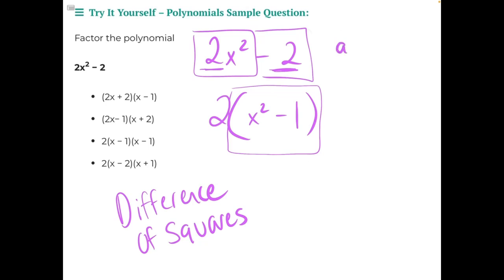The standard form of a difference of squares problem is a squared minus b squared. And the way this is factored out is a plus b times a minus b.